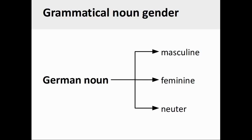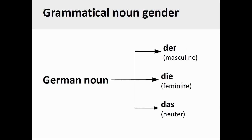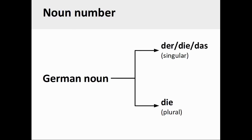Now, how do we use these personal pronouns to refer to nouns? You will recall from our earlier presentation on German nouns and definite articles that German nouns have a grammatical gender — they are either masculine, feminine, or neuter. You will also recall that the grammatical gender of a German noun determines its definite article. Masculine nouns have the definite article der, feminine nouns have die, and neuter nouns have das. Finally, plural German nouns do not manifest any gender and their definite article is always die.